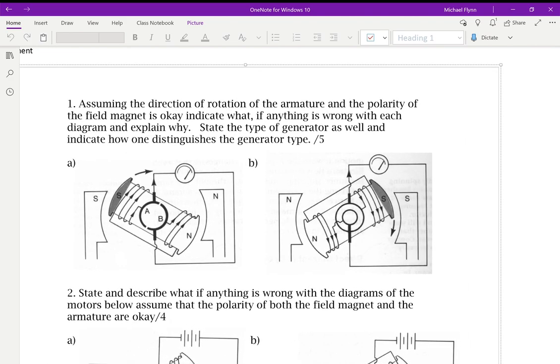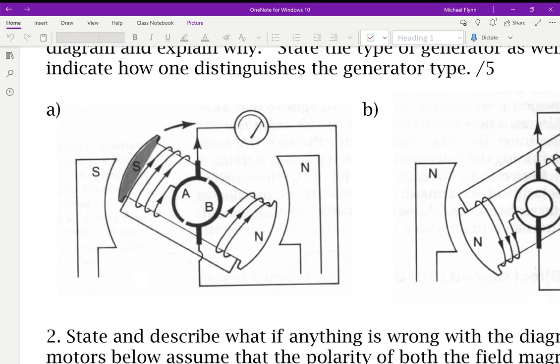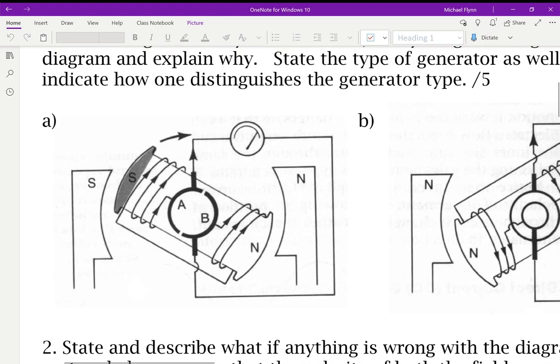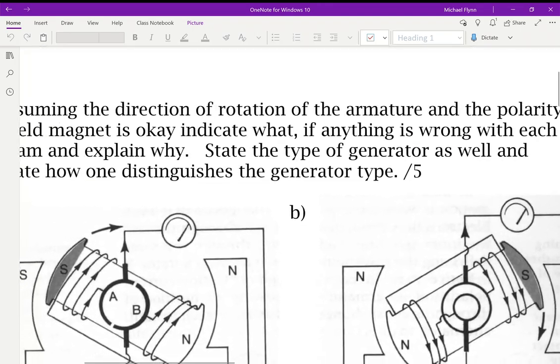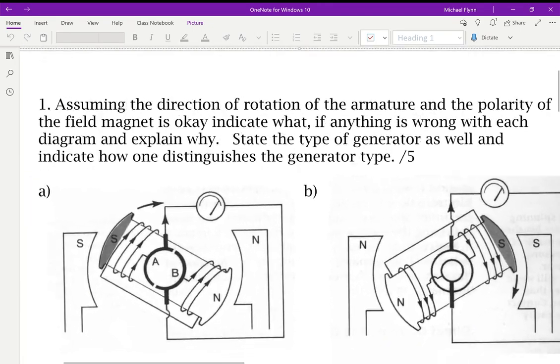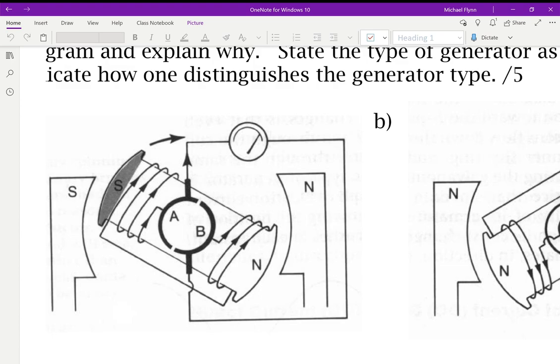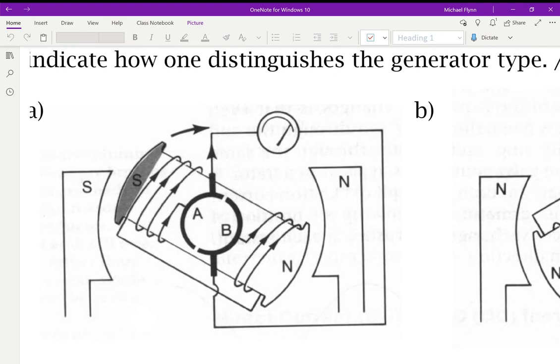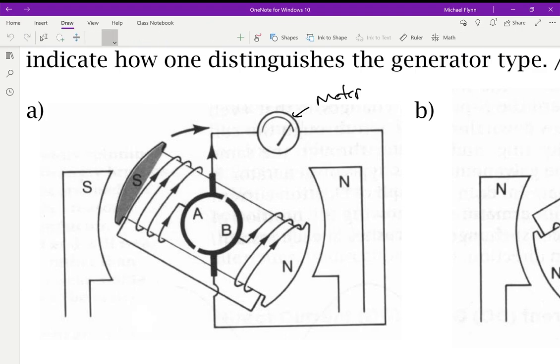The first question says, assuming the direction of rotation of the armature and the polarity of the field magnet is okay, indicate what, if anything, is wrong with each diagram and explain why. State the type of generator as well and indicate how one distinguishes the generator type. So if you look at this, first of all, these are generators, yes. You can tell it's a generator by this, it's a meter and not a power source.